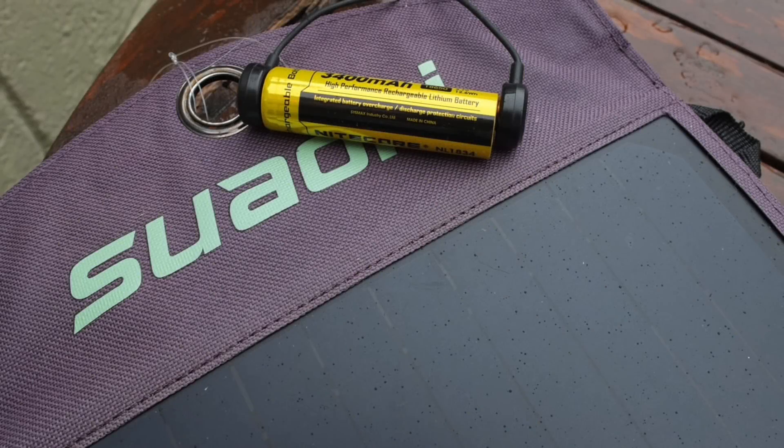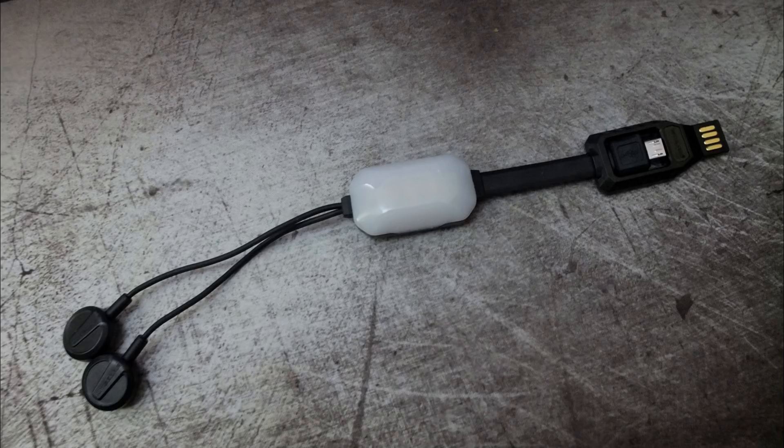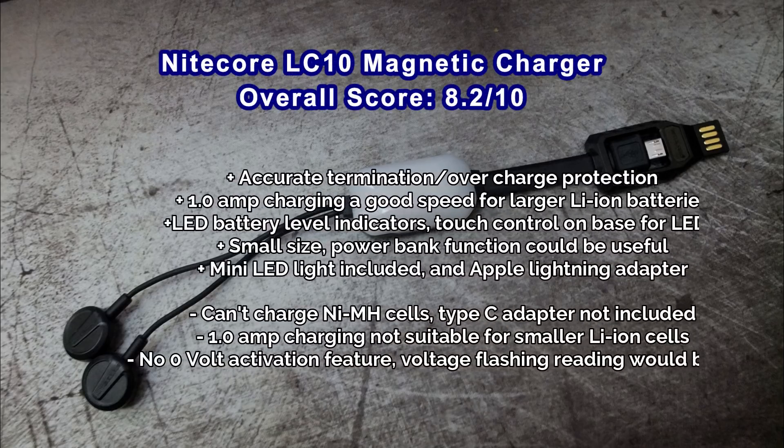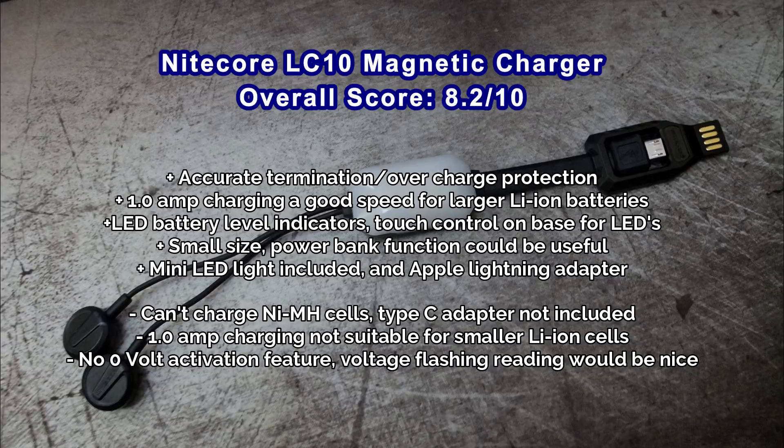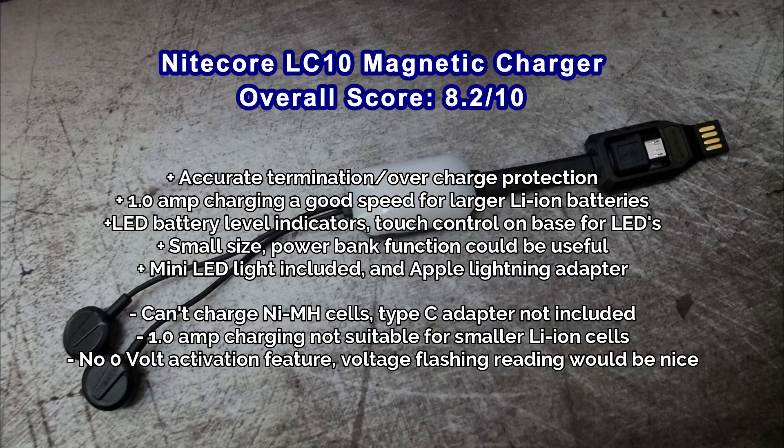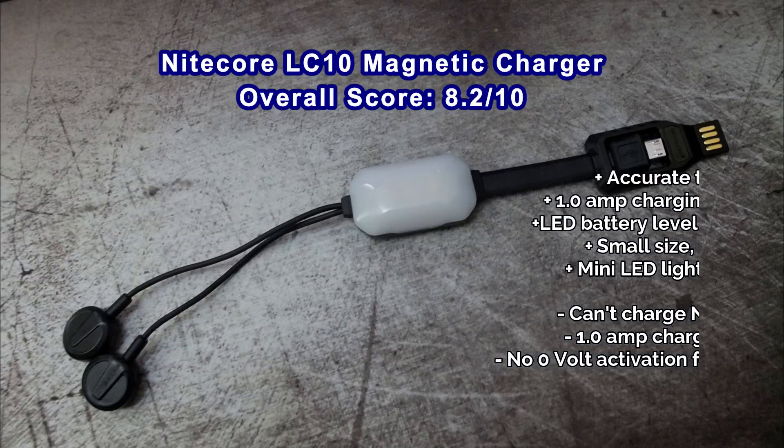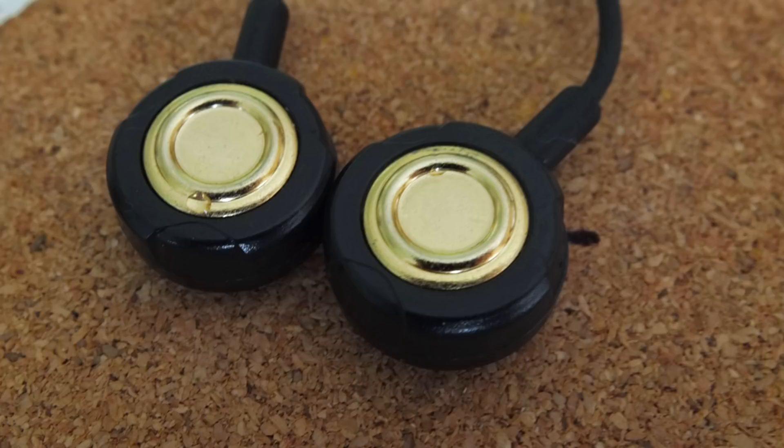Now I've blistered out my pros and cons. Basically it's down to can't charge nickel metal hydride, the type C adapter, and I would like to have control over the charging just with a switch, drop it down to half an amp for smaller cells. And maybe they could have added the voltage flashing feature, that would be nice.